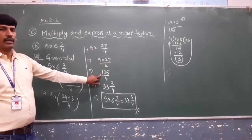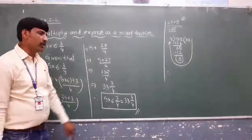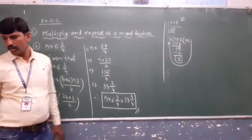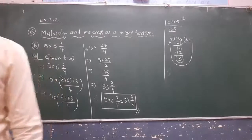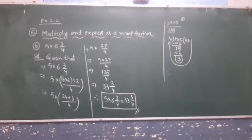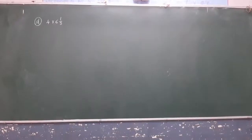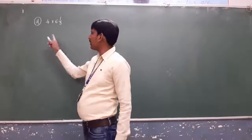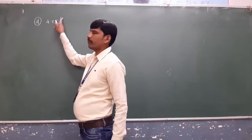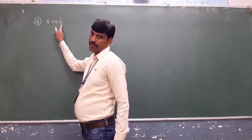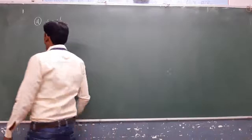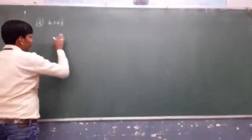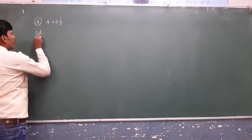To summarize: convert the mixed fraction into an improper fraction, multiply with 5 in the numerator (denominator stays as is), then after getting the answer — which is also an improper fraction — convert into a mixed fraction. Now let us discuss one more problem from question number 6, that is part D: 4 × 6⅓.